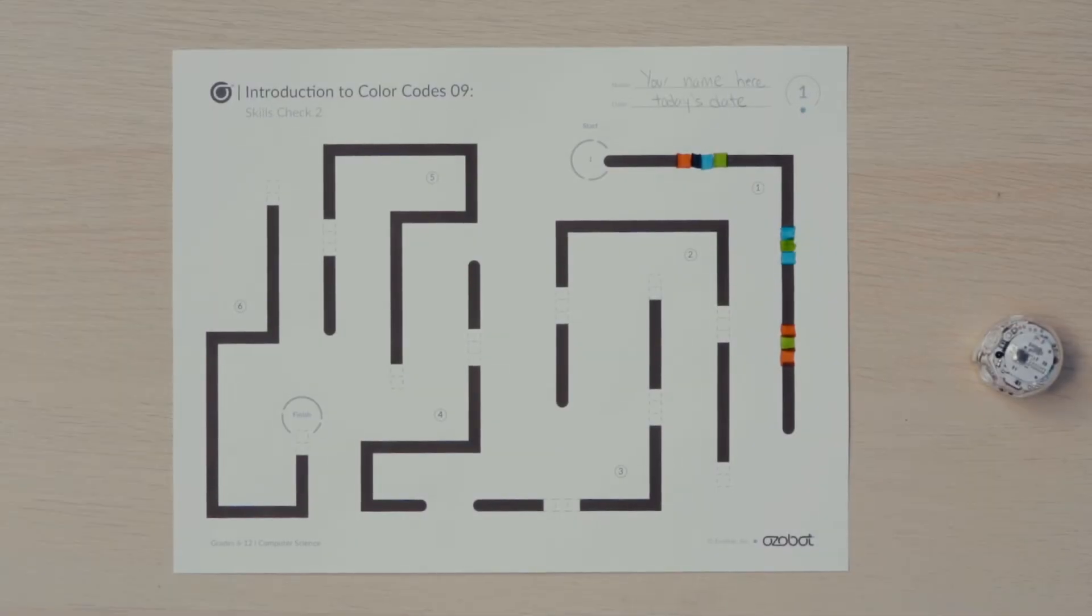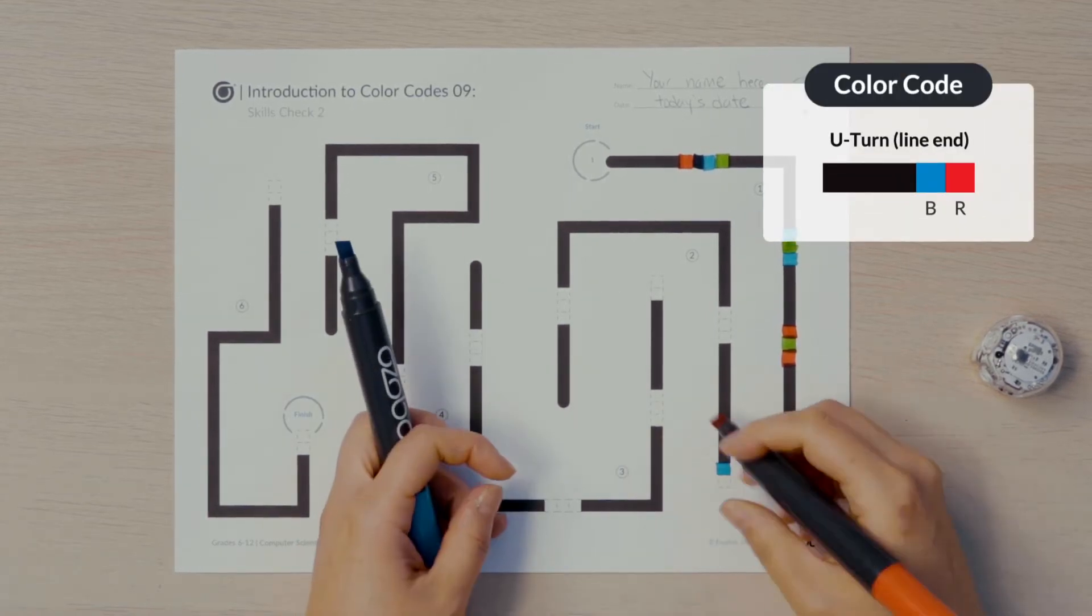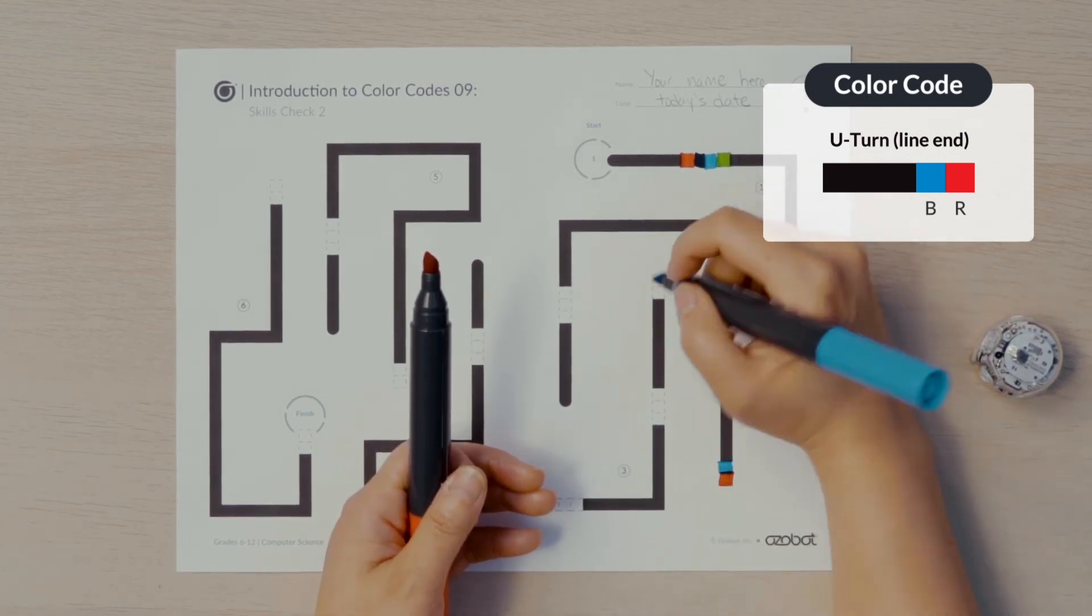Follow along the path your bot will go and notice the next two line segments, two and three, have three spaces for color codes. The space with two blocks at the end of each line segment is for a U-turn code. On your color codes chart, find the U-turn line end code and fill it in.